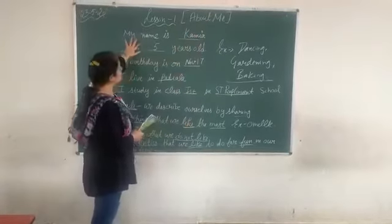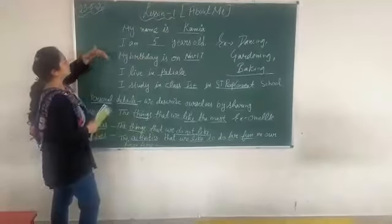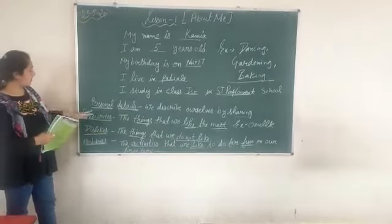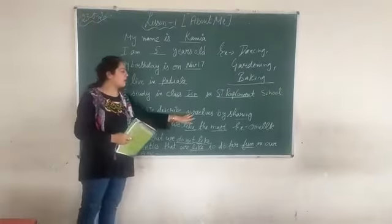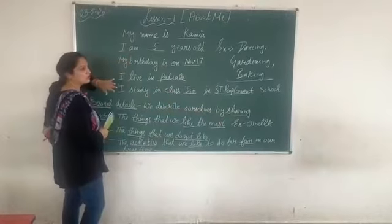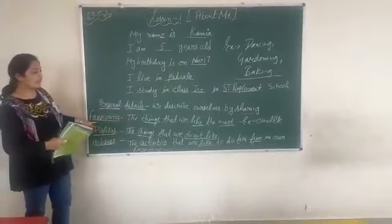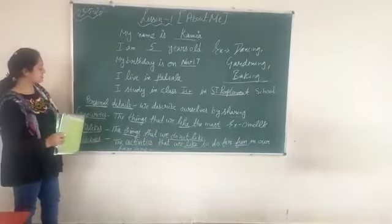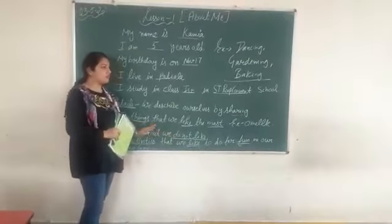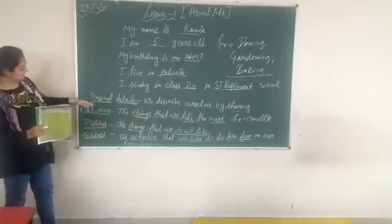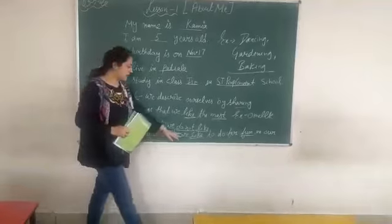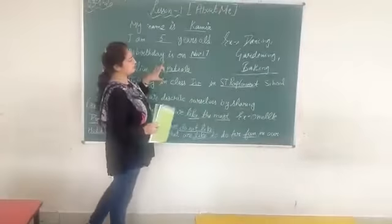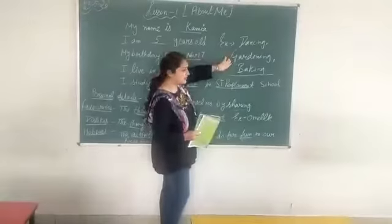This is all about the lesson — about me. We talked about the introduction, then we gave our own introduction, and last we discussed the definitions. Personal details: we describe ourselves by sharing. Favorites: things we like the most. Dislikes: things we do not like. Likes: things we like the most. Hobbies: activities we like for fun in our free time — like dancing, carving, baking, photography, etc.